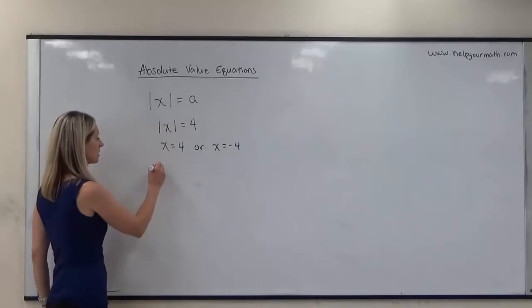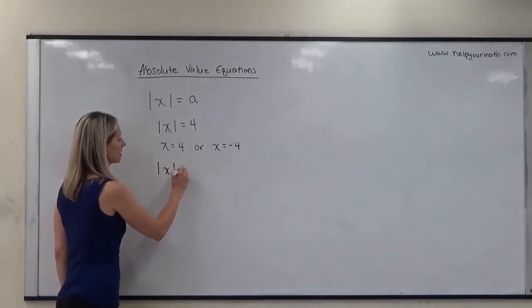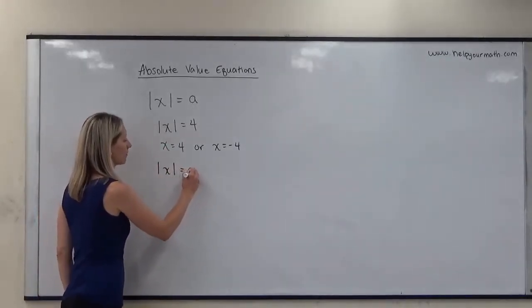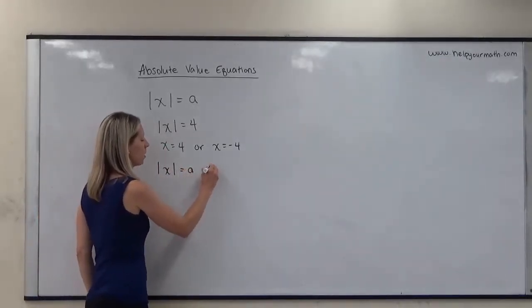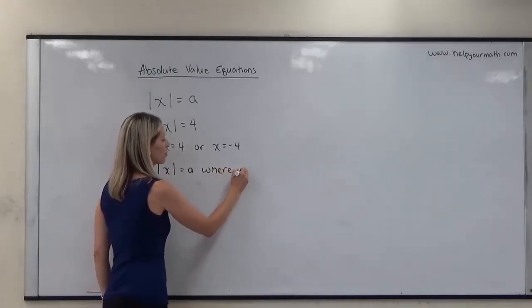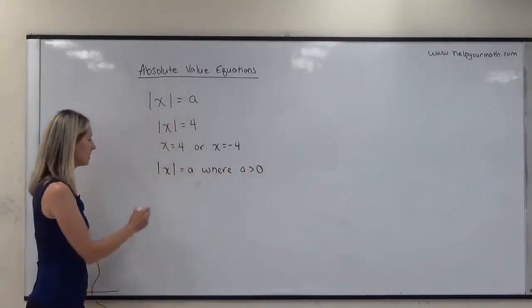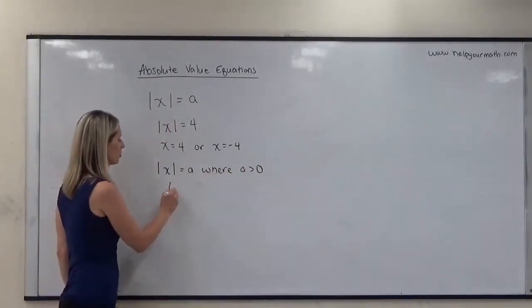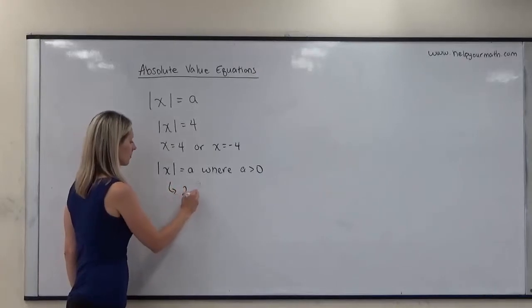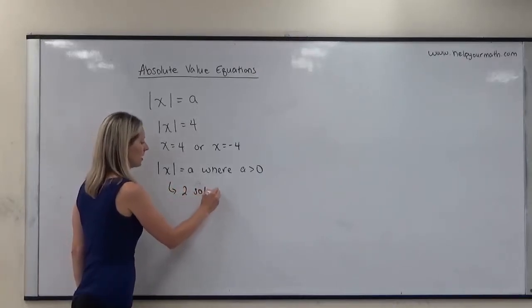So if the absolute value of x equals a, where a is greater than zero — indicating a is positive — there are always two solutions.